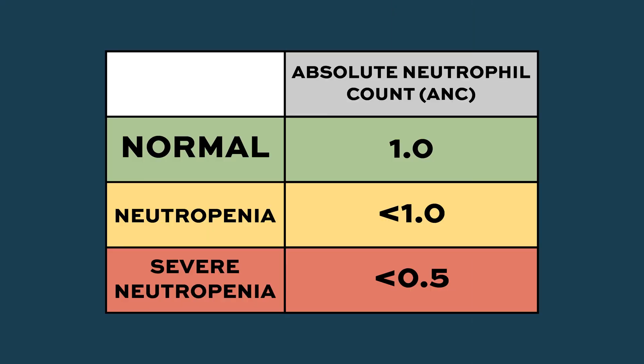If you look at that absolute neutrophil count, if it's 1.0 then we say your neutrophils are a thousand. Less than that is neutropenia. Severe neutropenia is an absolute neutrophil count less than 0.5. Most labs don't just do percentages — we used to have to calculate it.